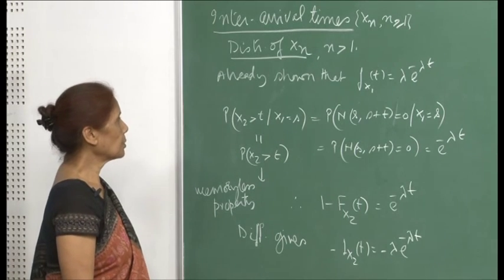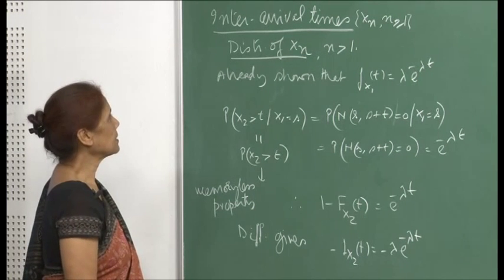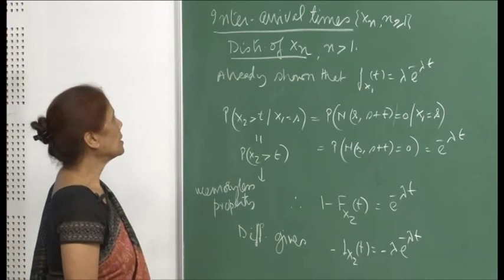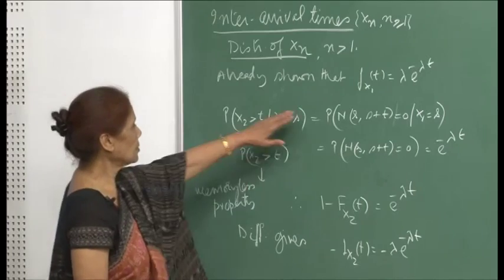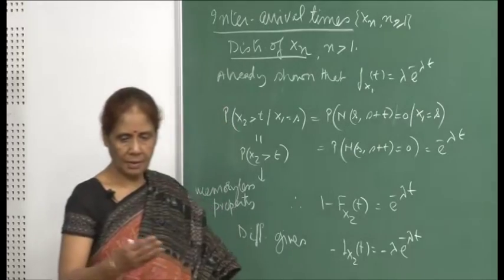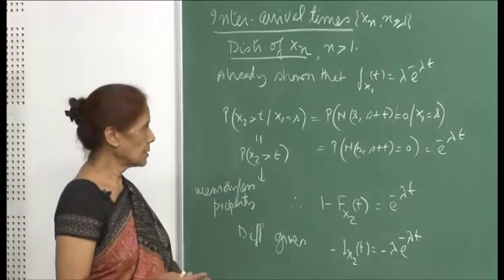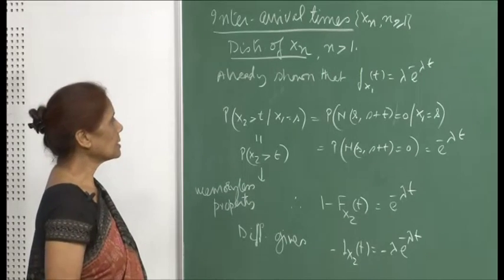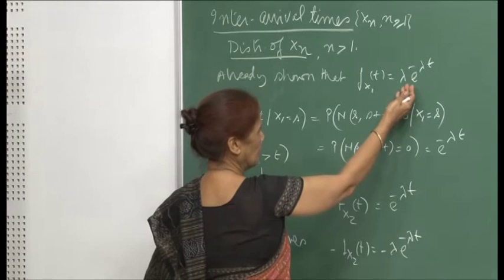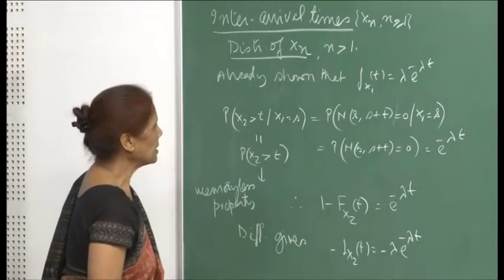I will quickly go over the inter-arrival times discussed in the last lecture and obtain the distribution for inter-arrival times. We showed that f(x1, t) = λe^(−λt), where x1 denotes the arrival time up to the first event. That means the interval for the first event has an exponential distribution with parameter lambda.